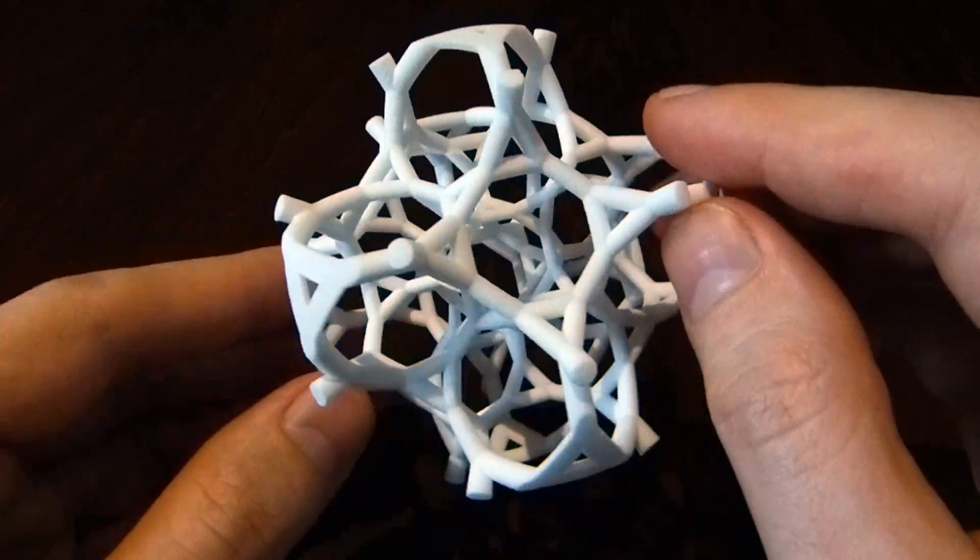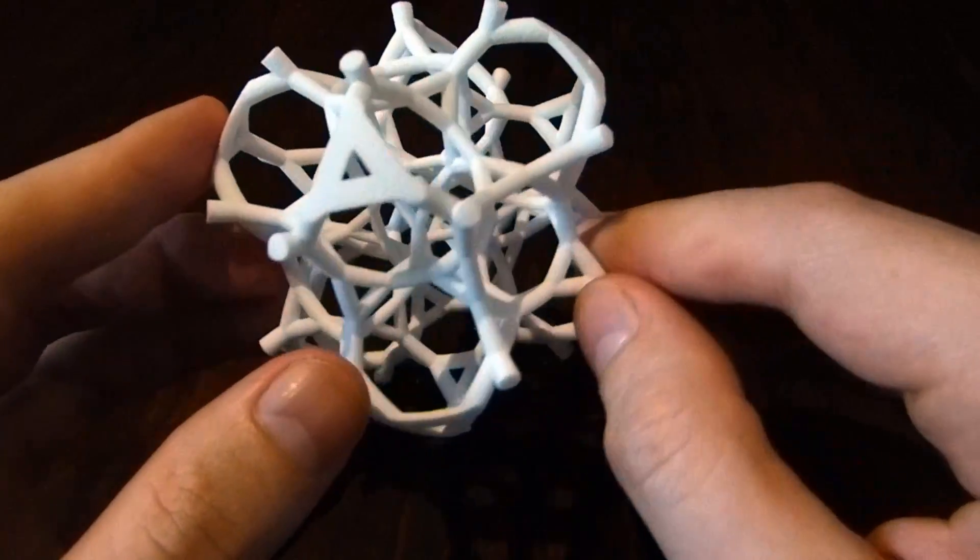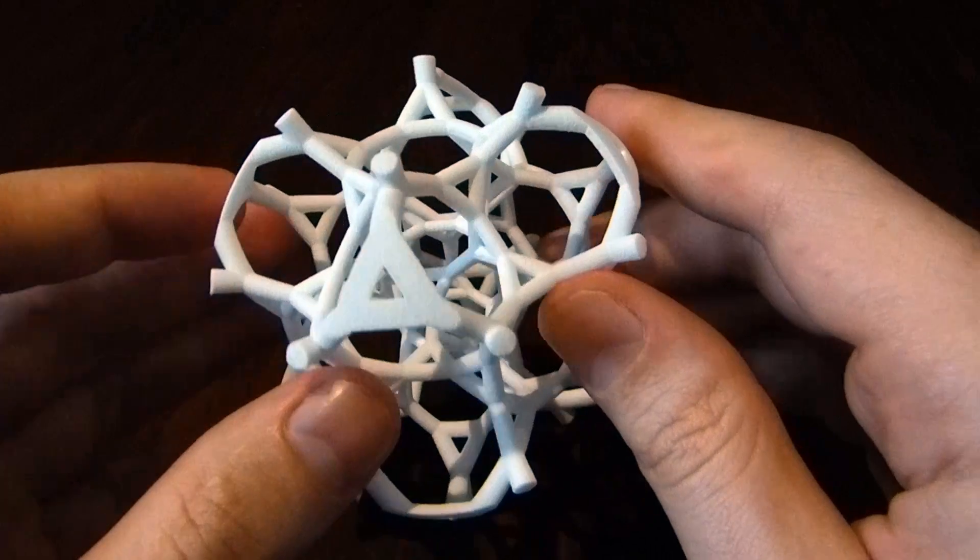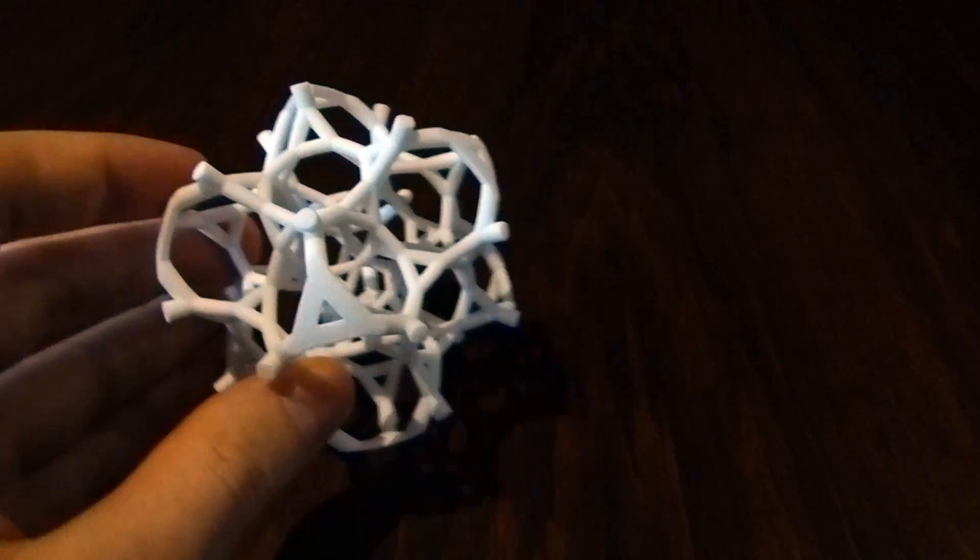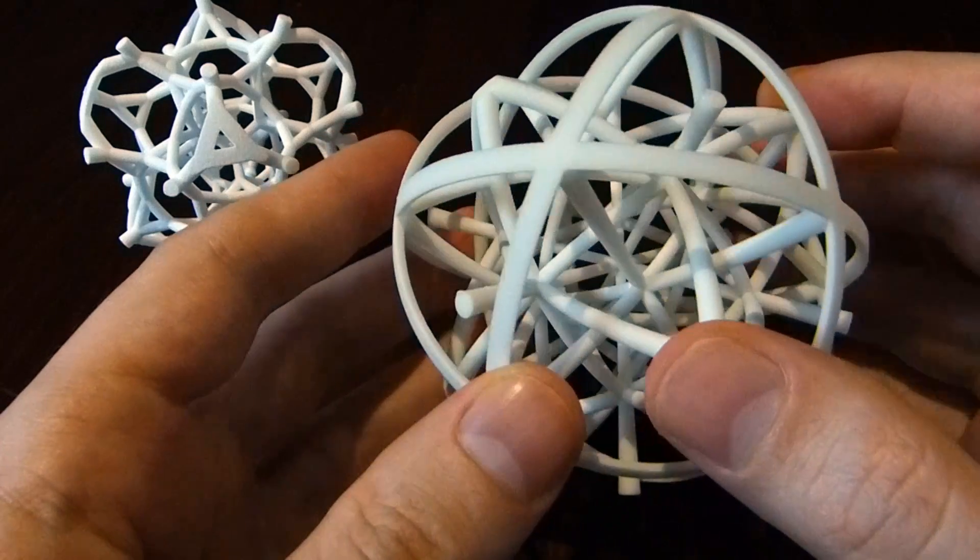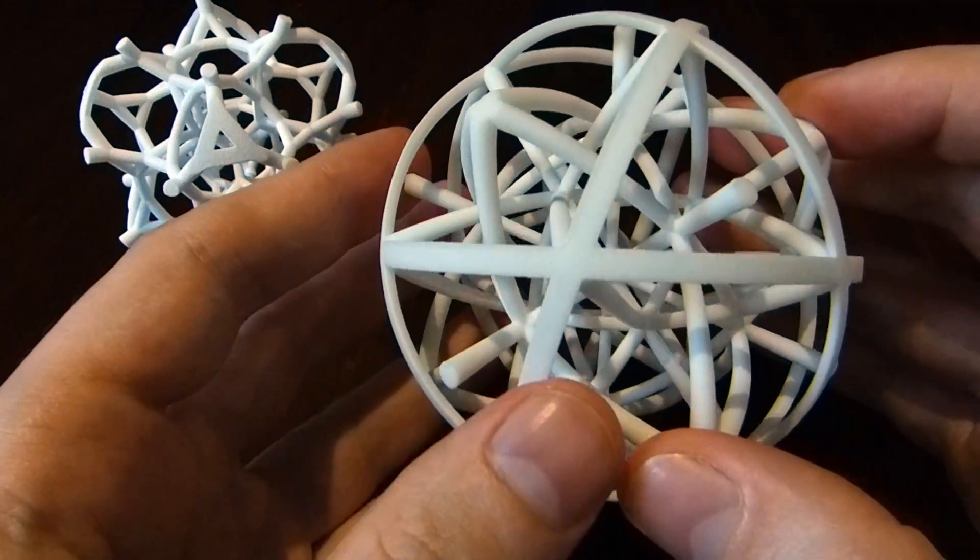So where does this come from? Another name for the 48-cell is the bitruncated 24-cell. I made this model a while ago. This is dual half 24-cells, and this shows how the 24-cell is dual to itself.